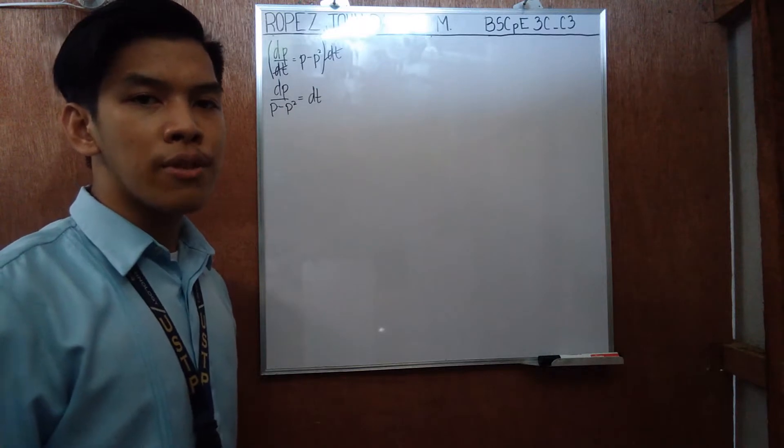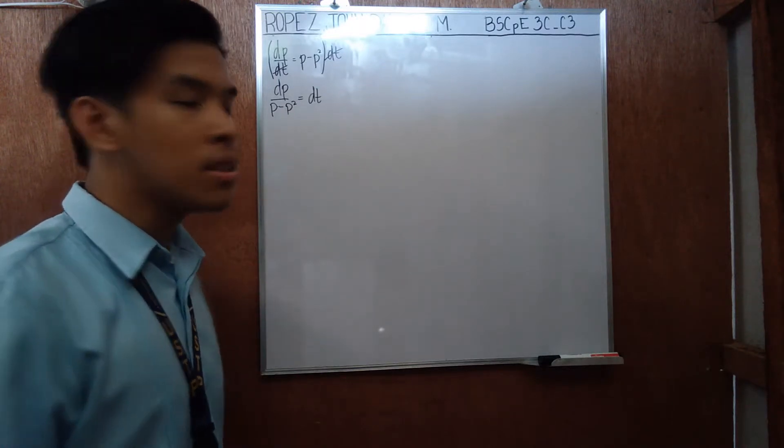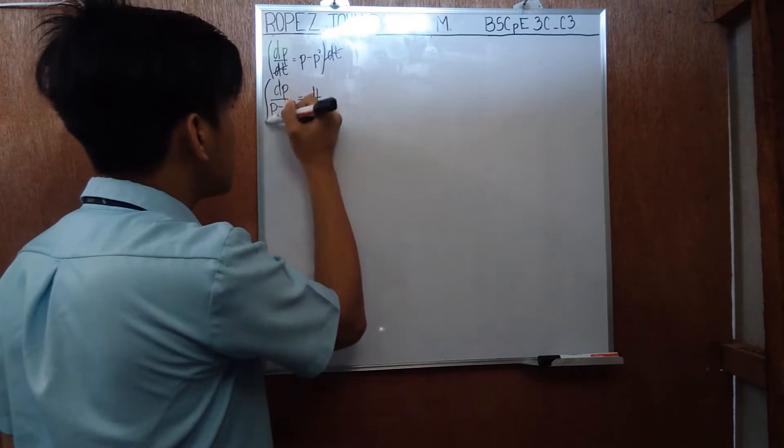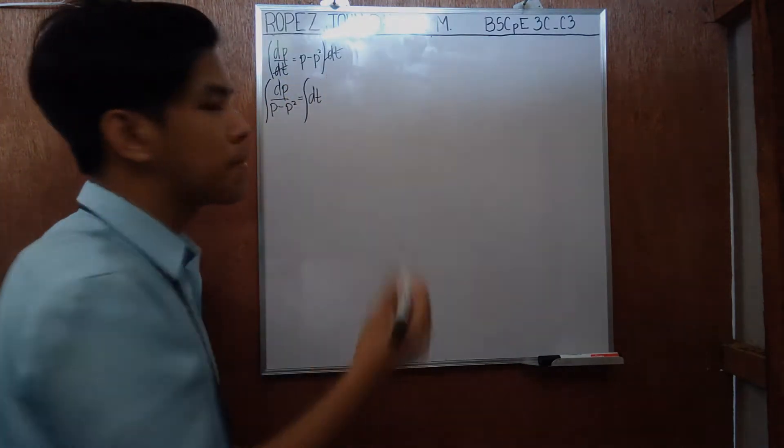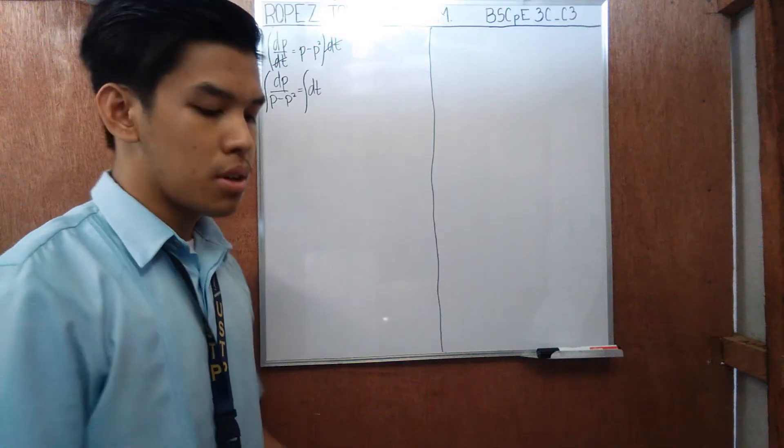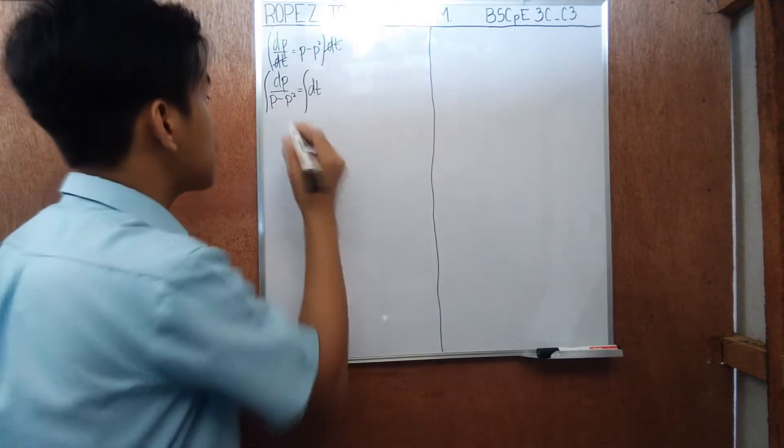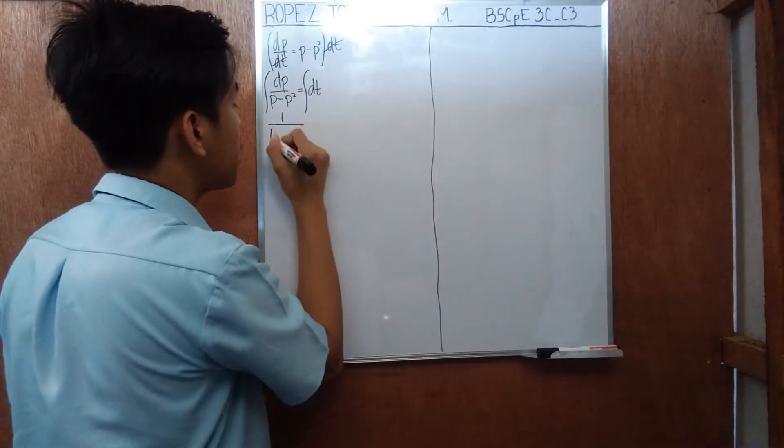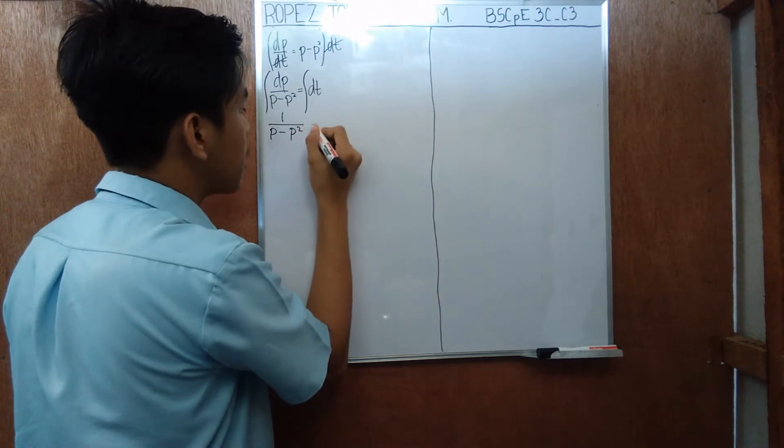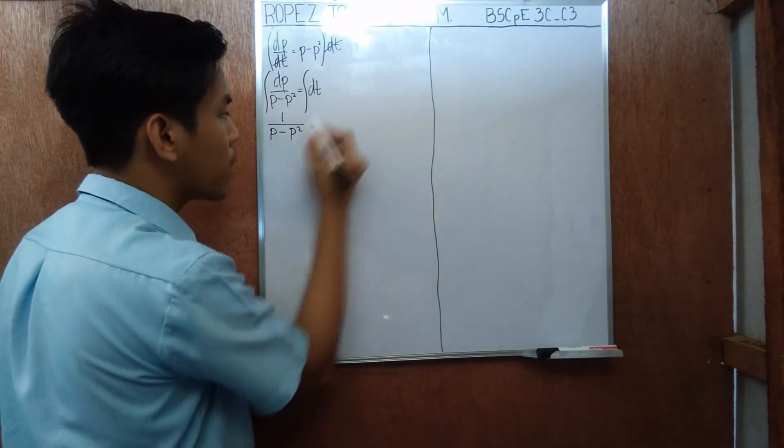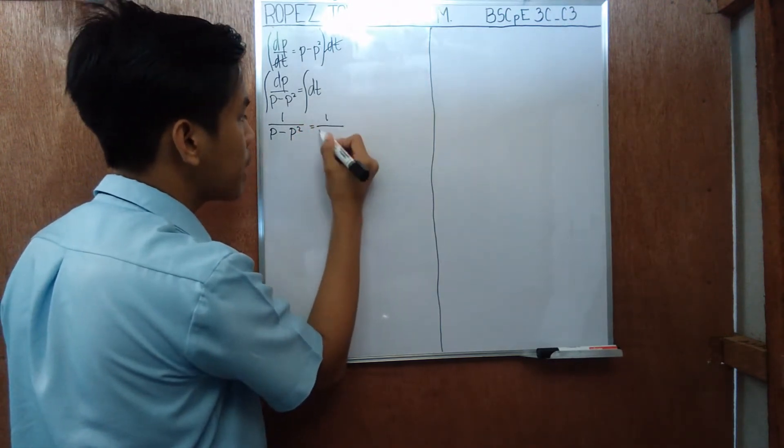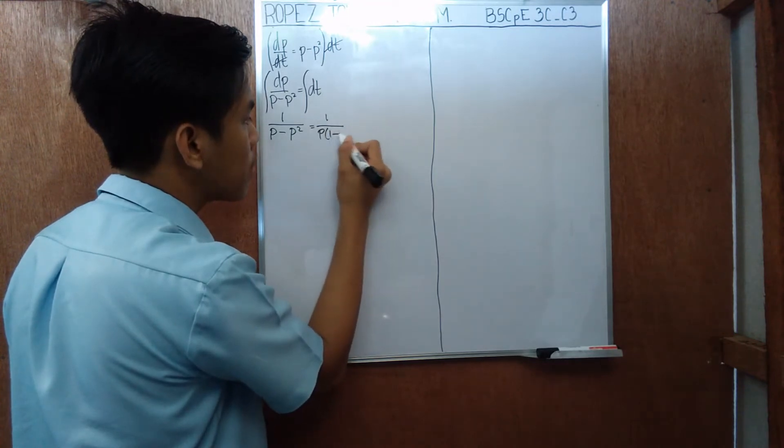We're going to integrate both sides. We'll integrate left hand side and the right hand side. So we rewrite the integrand as follows: 1 over p minus p squared. And if we factor out p squared, we'll get 1 over p, 1 minus p.